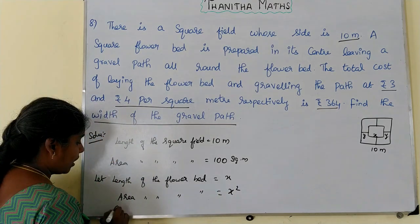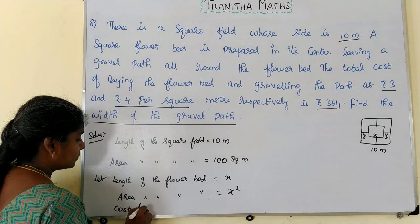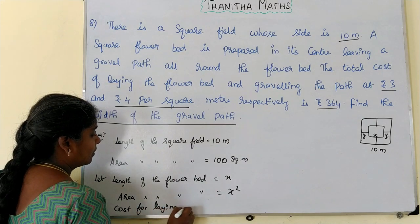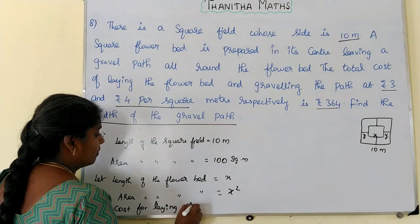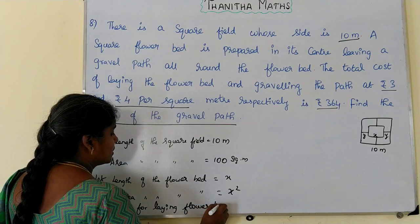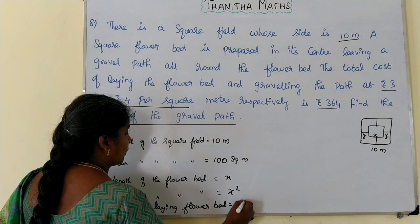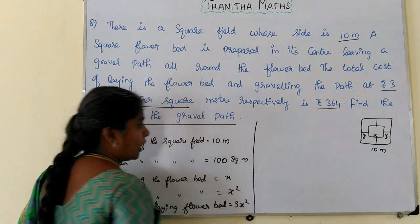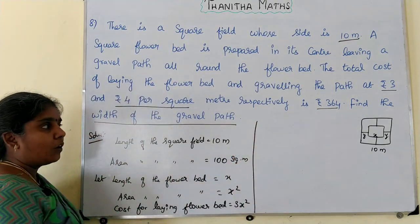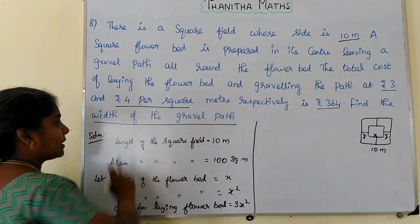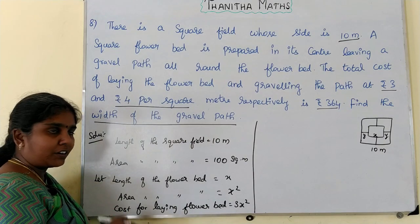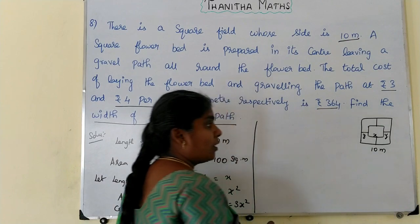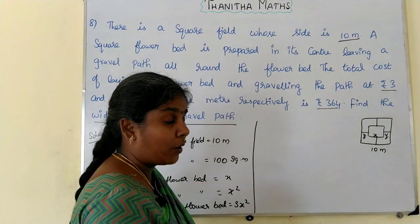The cost for laying the flower bed is equal to 3x squared. Next, for the pathway, the pathway area is equal to y squared.